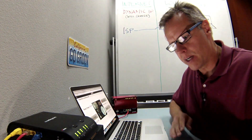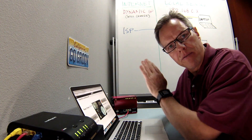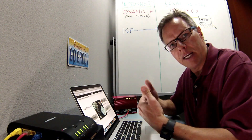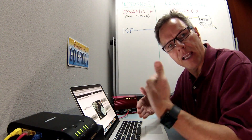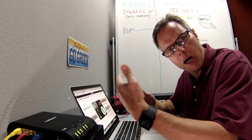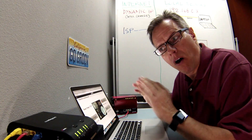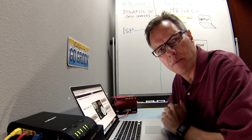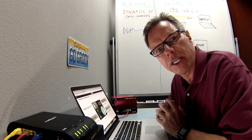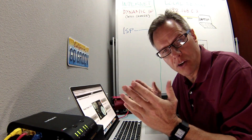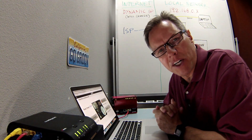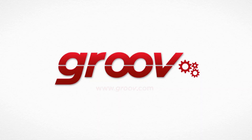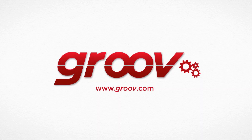So now I've configured my router, configured a domain name with my provider, and connected the two — allowing the router to automatically update that DNS record should the IP address on the WAN side ever change. That's all there is to it. Thanks for watching and Groove on. I'll see you next time.